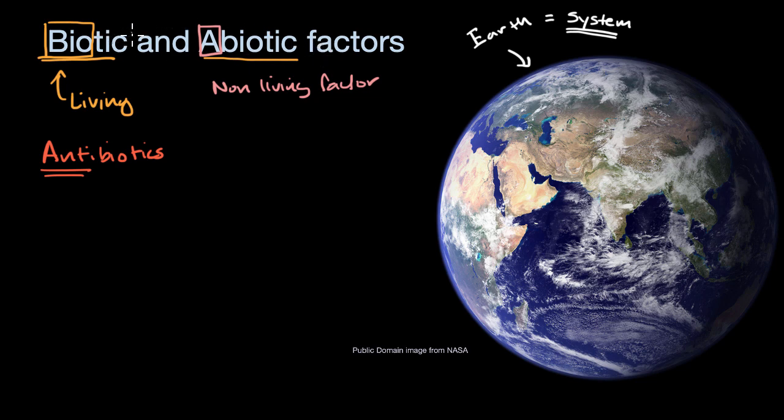So now that we have the basics of living factors and non-living factors, biotic and abiotic, let's start to break down Earth as a system into some of the highest level systems that people will describe it. And these tend to be described as spheres.